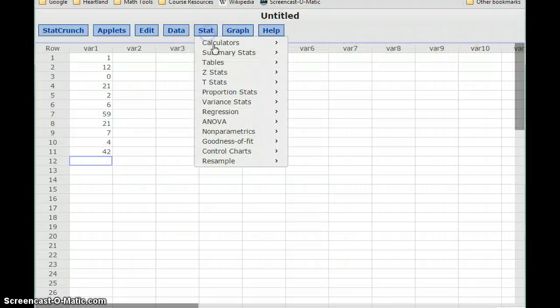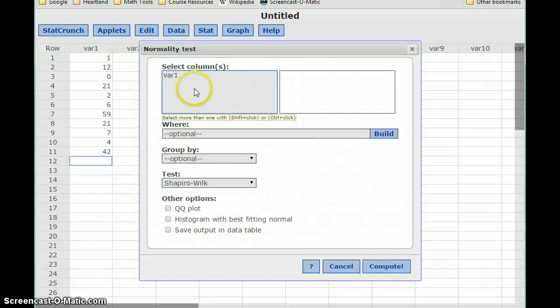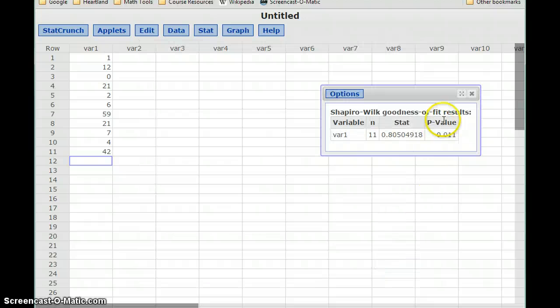With the data already entered into StatCrunch, we'll select the Shapiro-Wilk normality test and generate our p-value, which in this case comes out to be 0.011.